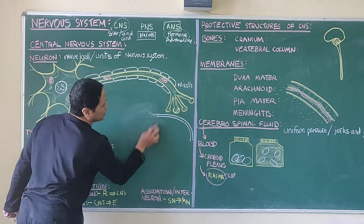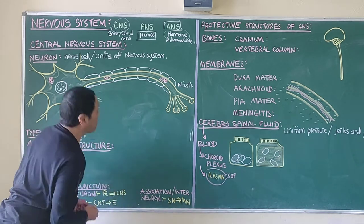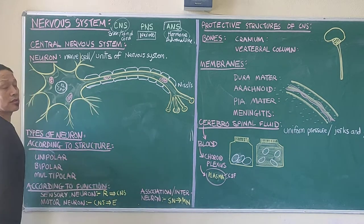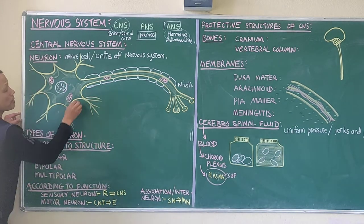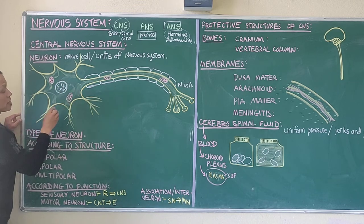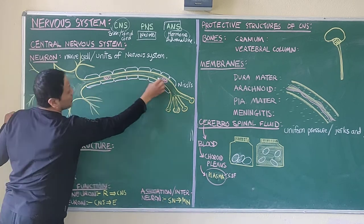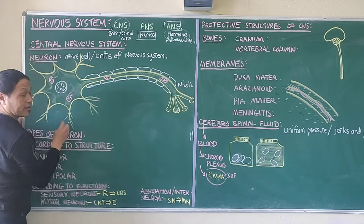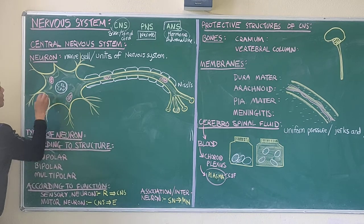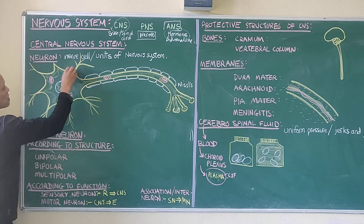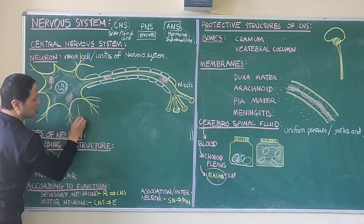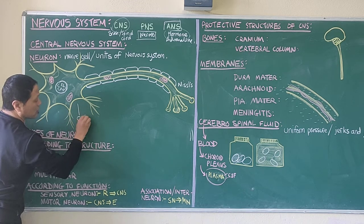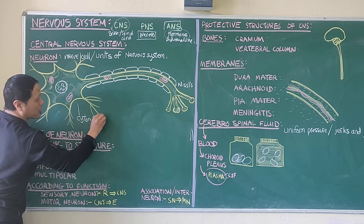Let's go through all the different parts of this cell. This here is the main body of the cell, which has the nucleus, mitochondria, and all the cytoplasmic content. This main body of the cell is called the cytoplasm, or it's also known as the perikaryon. You must remember these terms.